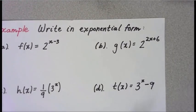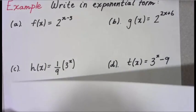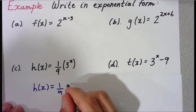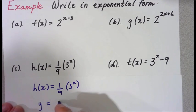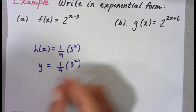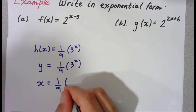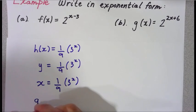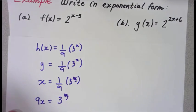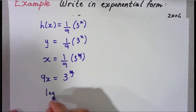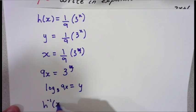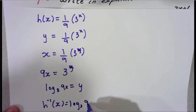We have h of x equals one-ninth times 3 to the x. Write this as y equals one-ninth times 3 to the x. Switch x and y: x equals one-ninth times 3 to the y. Multiply both sides by 9: 9x equals 3 to the y. Now use the logarithm: log base 3 of 9x equals y. So h inverse of x equals log base 3 of 9x.